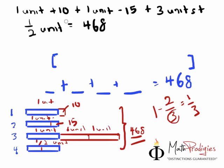So you just add this up. There is 1 unit here, 2 units here, 3 units here. So 1 plus 2, 1 plus 1 is 2, 2 plus 3 is 5, and half unit is half. So you get 5 and a half units plus 10 minus 15. How's that? When you plus 10 and you minus 15, you get minus 5. Equals to 468.